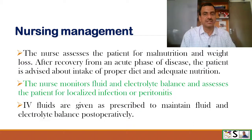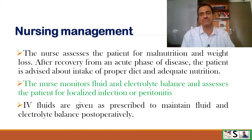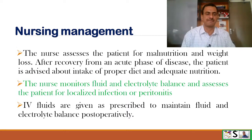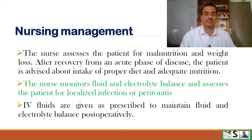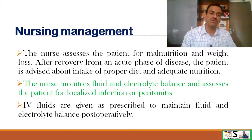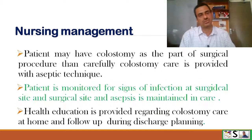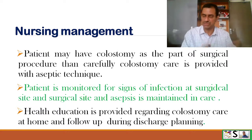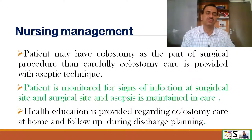The nurse assesses the patient for malnutrition and weight loss. The patient is continuously monitored for signs of dehydration. After recovery from the acute phase, the patient is advised about proper diet and adequate nutrition. The nurse monitors fluid and electrolyte balance and assesses the patient for localized infection or peritonitis. IV fluids are given as prescribed to maintain fluid and electrolyte balance postoperatively. Careful colostomy care is provided with aseptic technique.